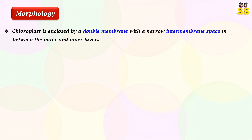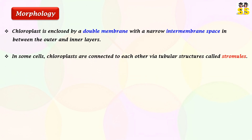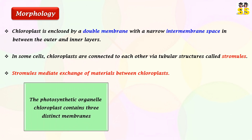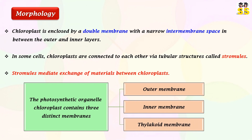Here are some of the morphological features of chloroplast. It is a double-membraned organelle with a narrow intermembrane space between the outer and inner layers. Stromules are tubular structures that connect chloroplasts with each other, functioning in the exchange of materials between chloroplasts. Chloroplast contains three distinct membranes: outer membrane, inner membrane, and thylakoid membrane.